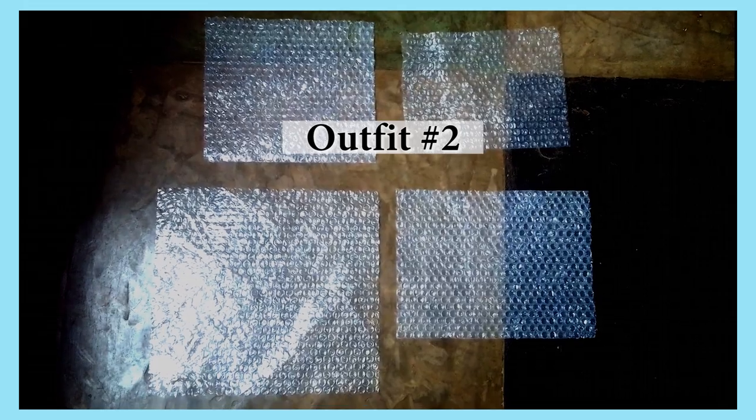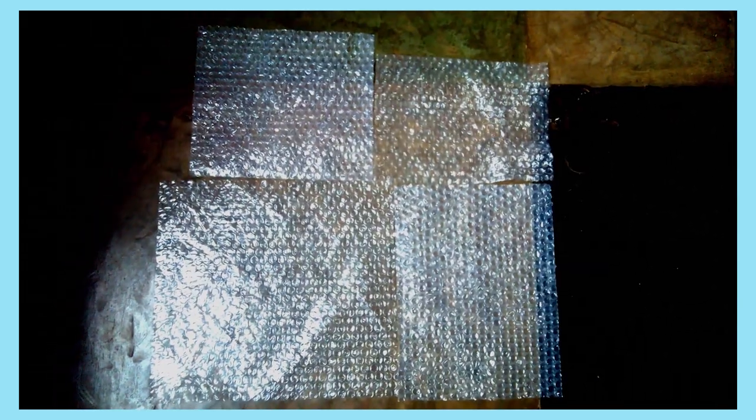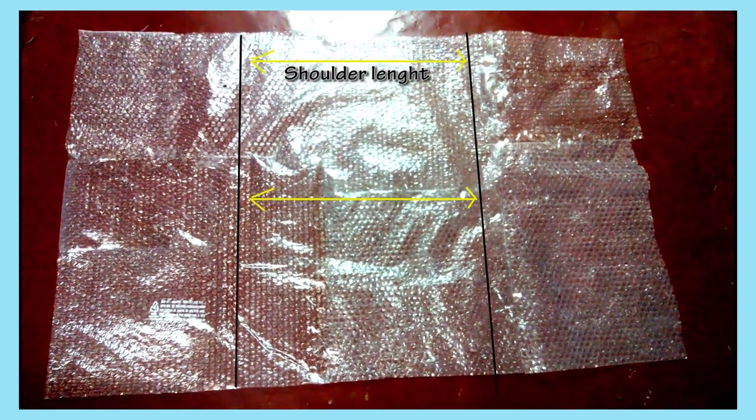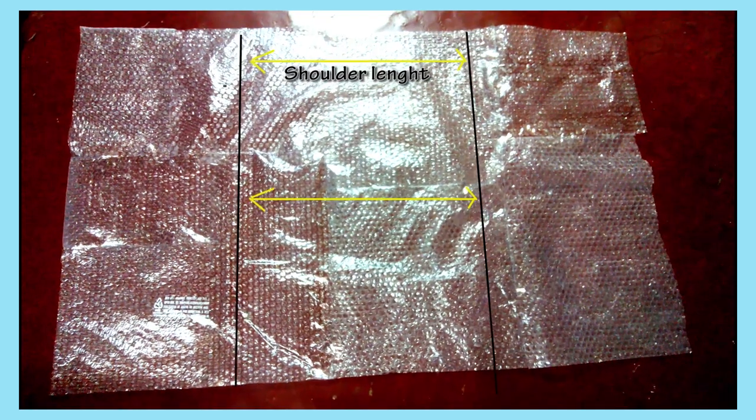Now for our second outfit, we're going to take the bubble wrap and paste them together using transparent tape to form a big bubble wrap. Next, we're going to fold it into three parts. The middle portion will be the length of our shoulders, so be sure to measure that.